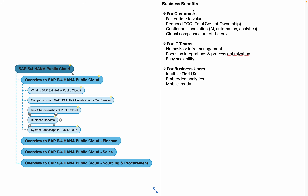Coming to the business benefits. For customers: faster time to value because there is no time wasted setting up infrastructure and customizations — we start with best practices. Reduced total cost of ownership because everything is operational expenses with no capex involved. Continuous innovation as SAP provides upgrades every six months, including AI adoption, automation, and analytics. Global compliance is available out of the box, as SAP has included regulatory requirements for many countries in the best practices content.